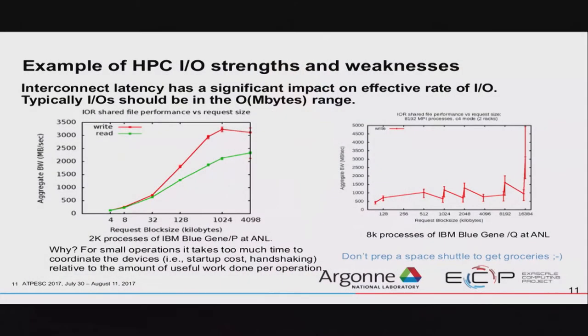To illustrate what this means: because the latency is so bad, it just isn't fast for small operations, but the bandwidth for big operations comes through. For example, writing data four kilobytes at a time might get you 100 megabytes per second. Writing a megabyte at a time gets you three to three and a half gigabytes per second — orders of magnitude difference in performance just by writing in bigger chunks.